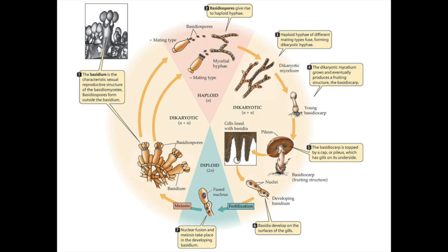After karyogamy, the basidia undergo meiosis. Through meiosis, each diploid nucleus yields four haploid nuclei, each of which develops into a basidiospore.